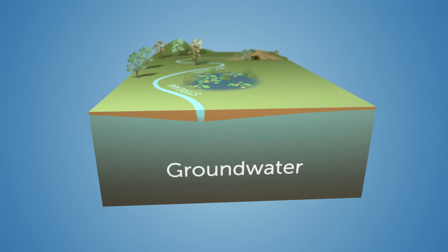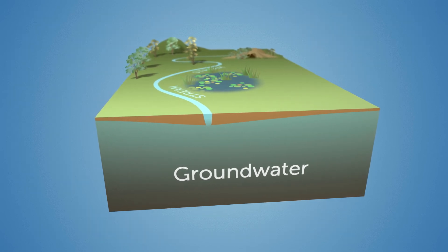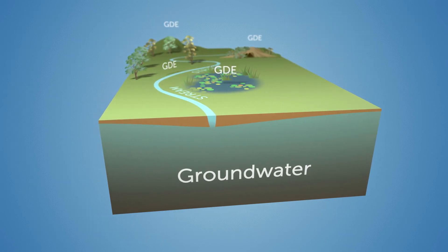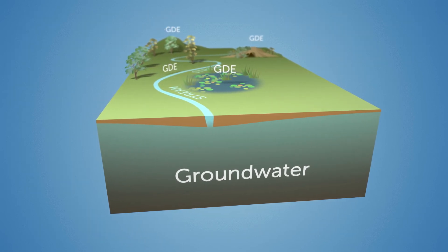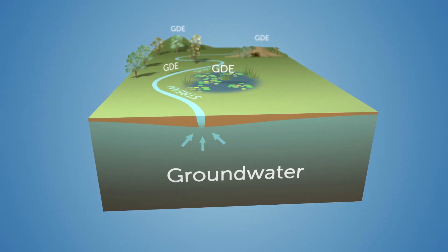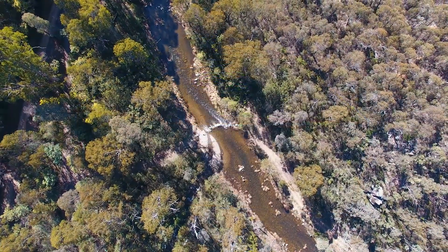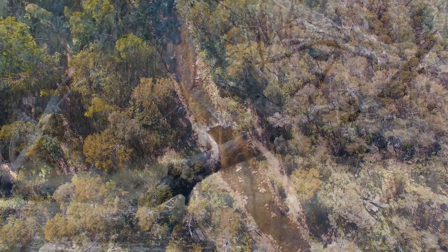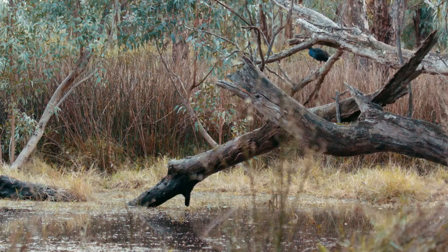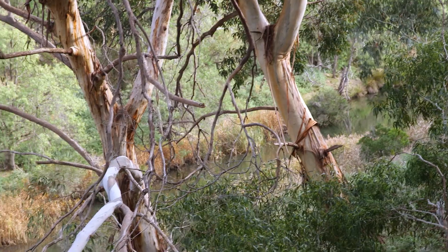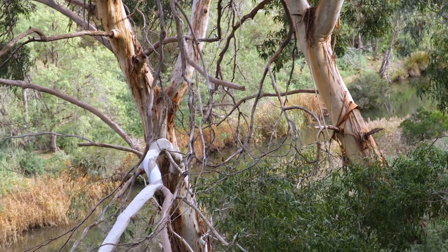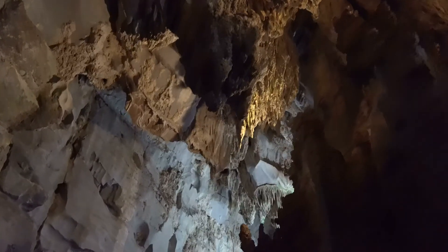Groundwater-dependent ecosystems, or GDEs, are natural systems that need groundwater for their health. They include rivers, wetlands and springs, as well as vegetation and caves.